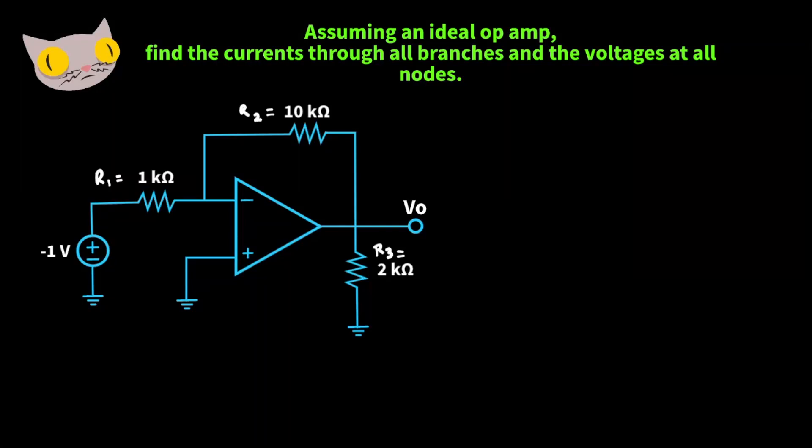Here we have an op amp. Now assuming that it's an ideal op amp, let's go ahead and find the currents through all the branches and the voltages at all the nodes.